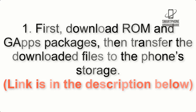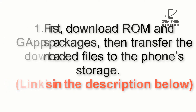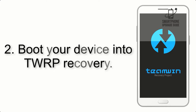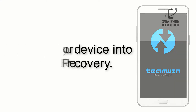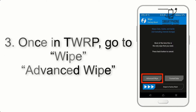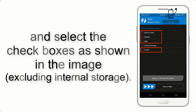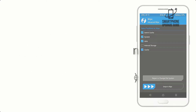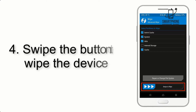The download link is in the description below. Step 3: boot your device into TWRP recovery. Once in TWRP, click on Wipe > Advanced Wipe and select the checkboxes as shown in the image, excluding internal storage.